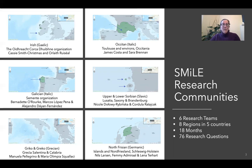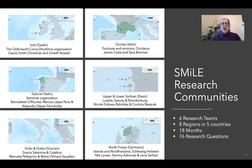The goal was to produce roughly comparative case studies around the same set of 76 research questions. The SMILE project ended up having six research teams spread across Europe: Irish, Occitan, Galician, Upper and Lower Sorbian, Greco, and North Frisian.